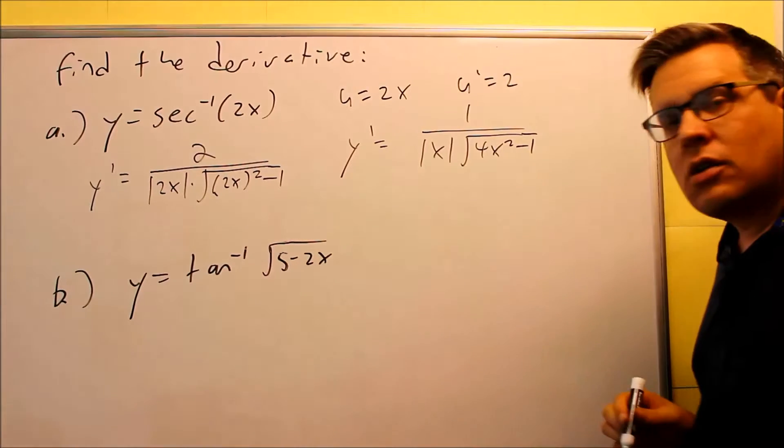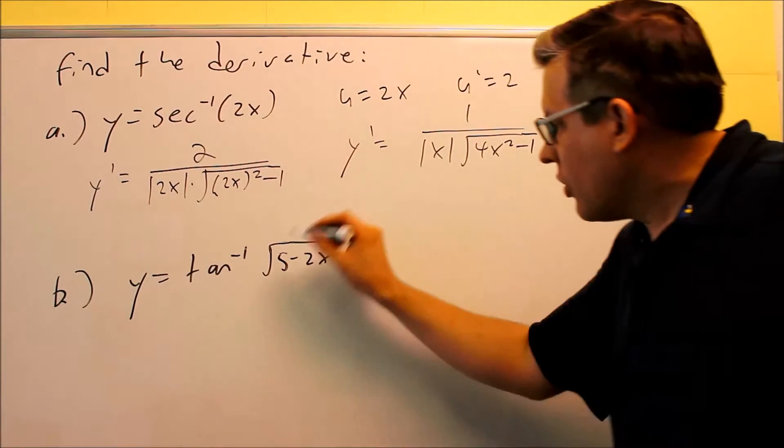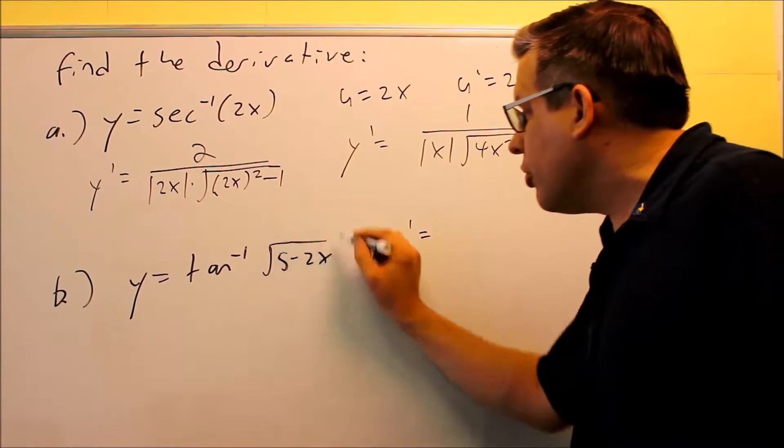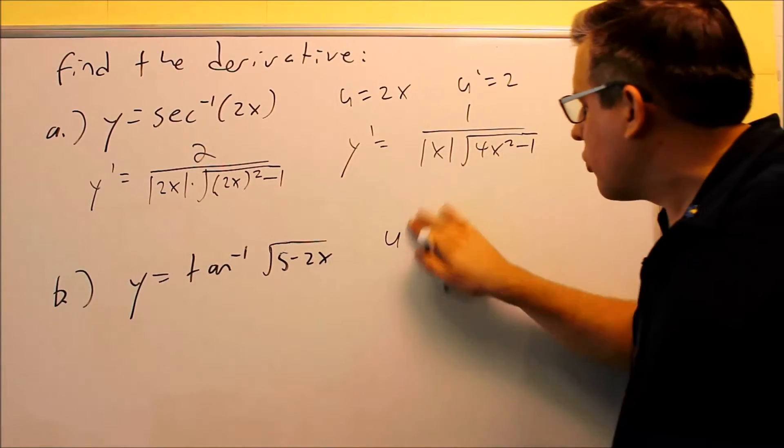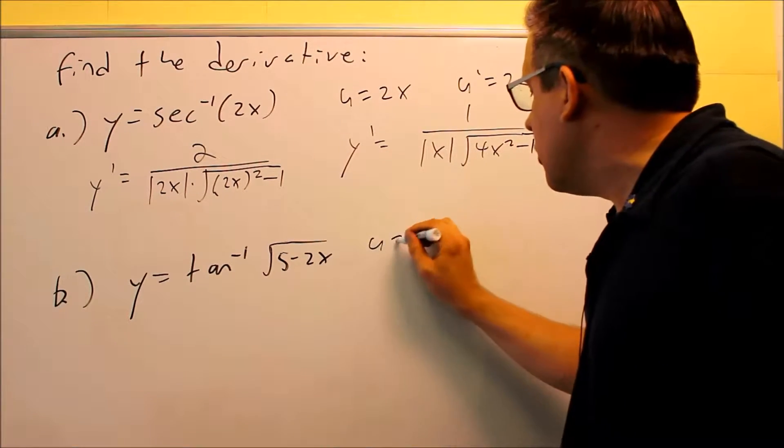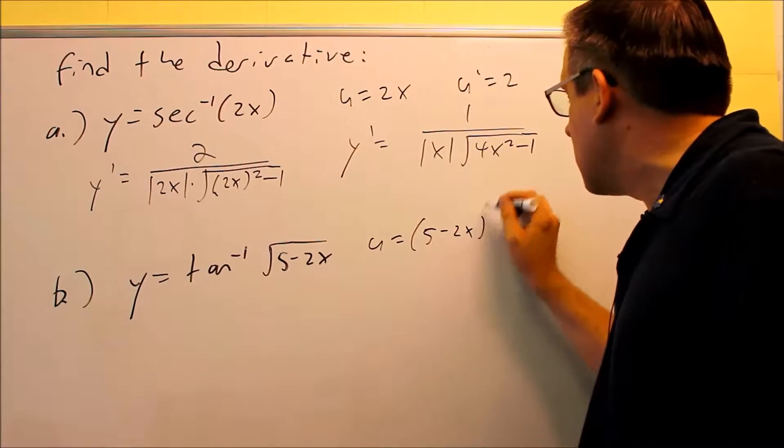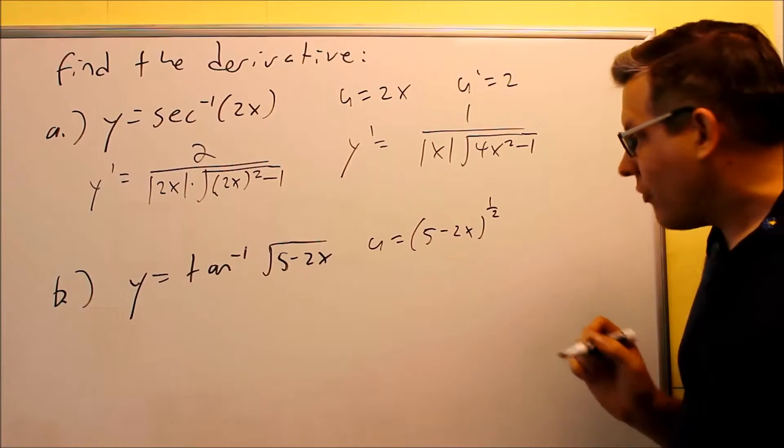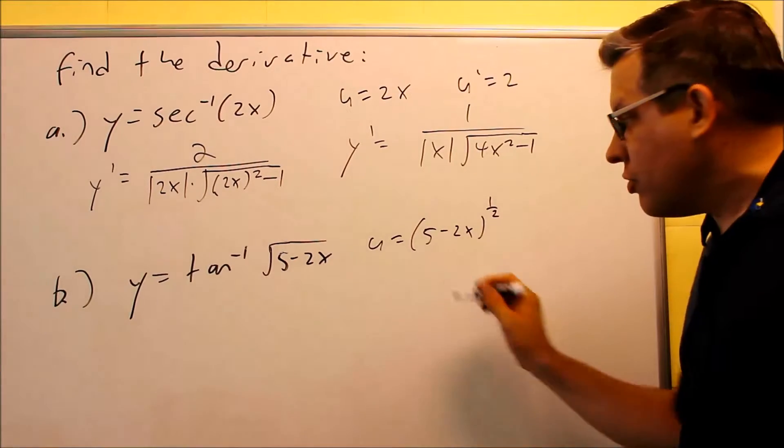So now, let's take a look at this one. We have to find the u-prime. Your u is going to be this, but let's write this first. So I'll say u is equal to 5 minus 2x to the 1 half power, so I'll rewrite it with the 1 half. That way it'll make it easier to do the derivative.